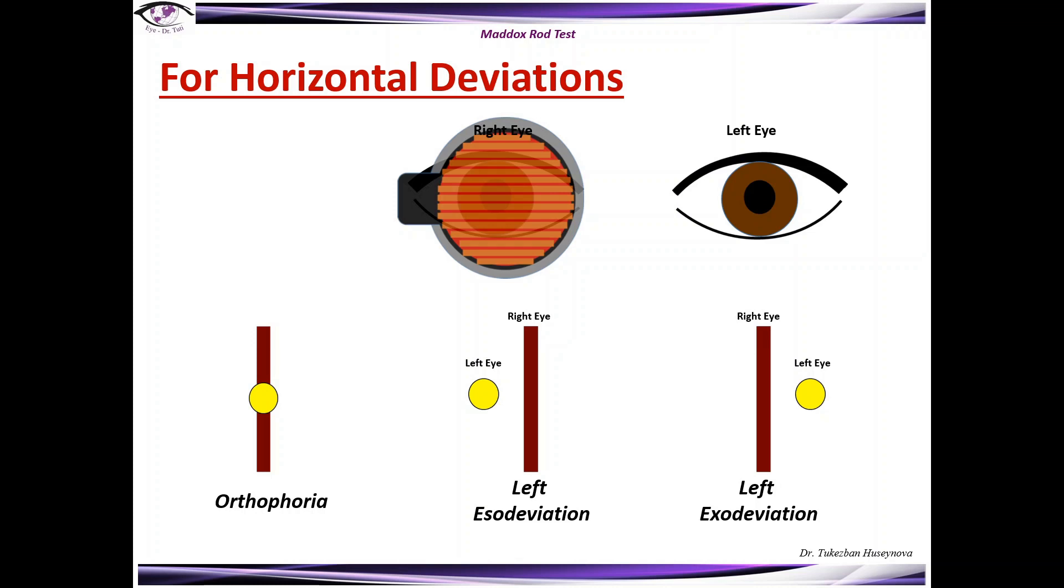I specifically wanted to point which exactly eye is esodeviated or exodeviated because in many resources we can see that they're describing that when the light is positioned on the right side this is esodeviation, but most of the time they are not specifying which exactly eye is esodeviated because you can also interpret it in a different way.